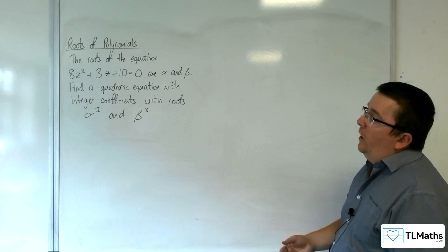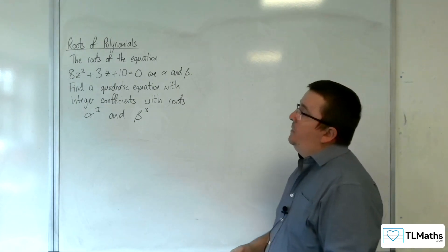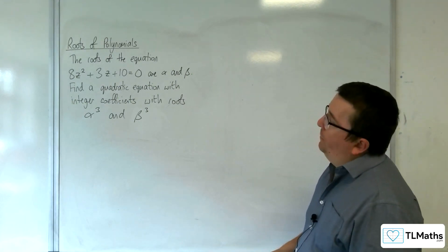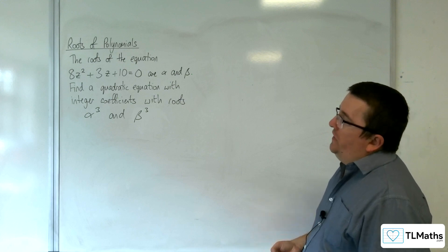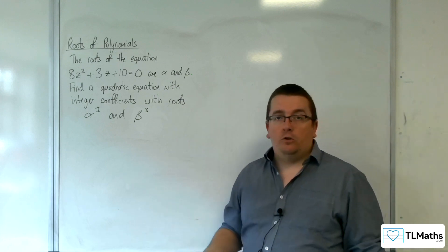In this video, the roots of the equation 8z² + 3z + 10 = 0 are α and β. Find a quadratic equation with integer coefficients with roots α³ and β³.